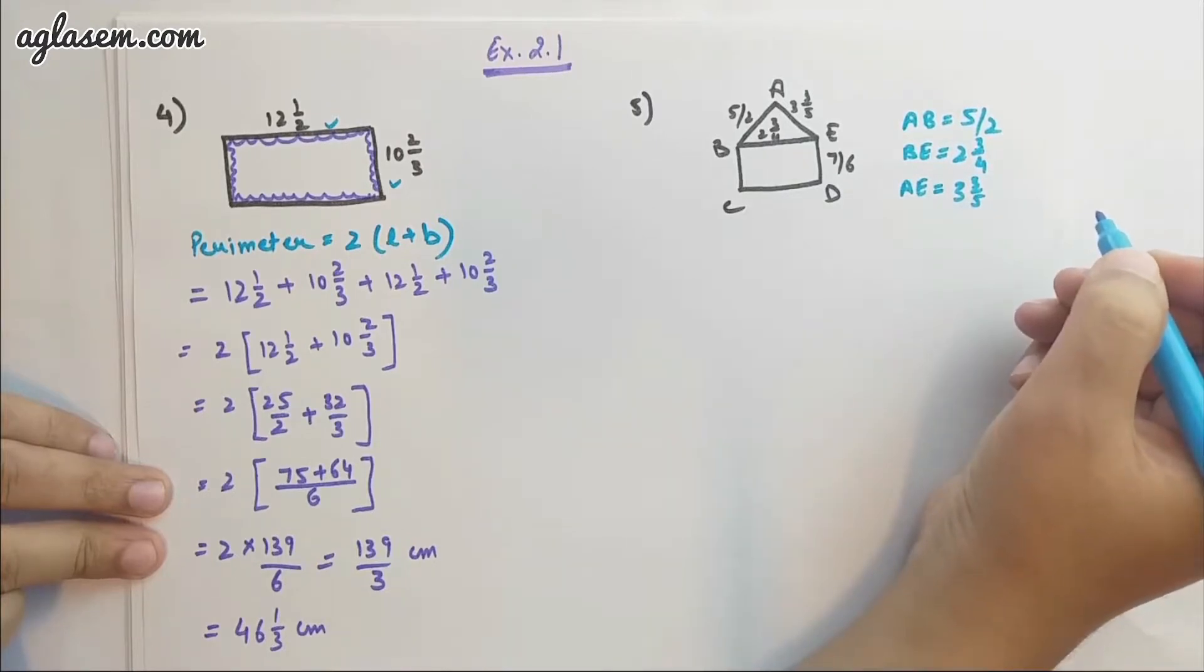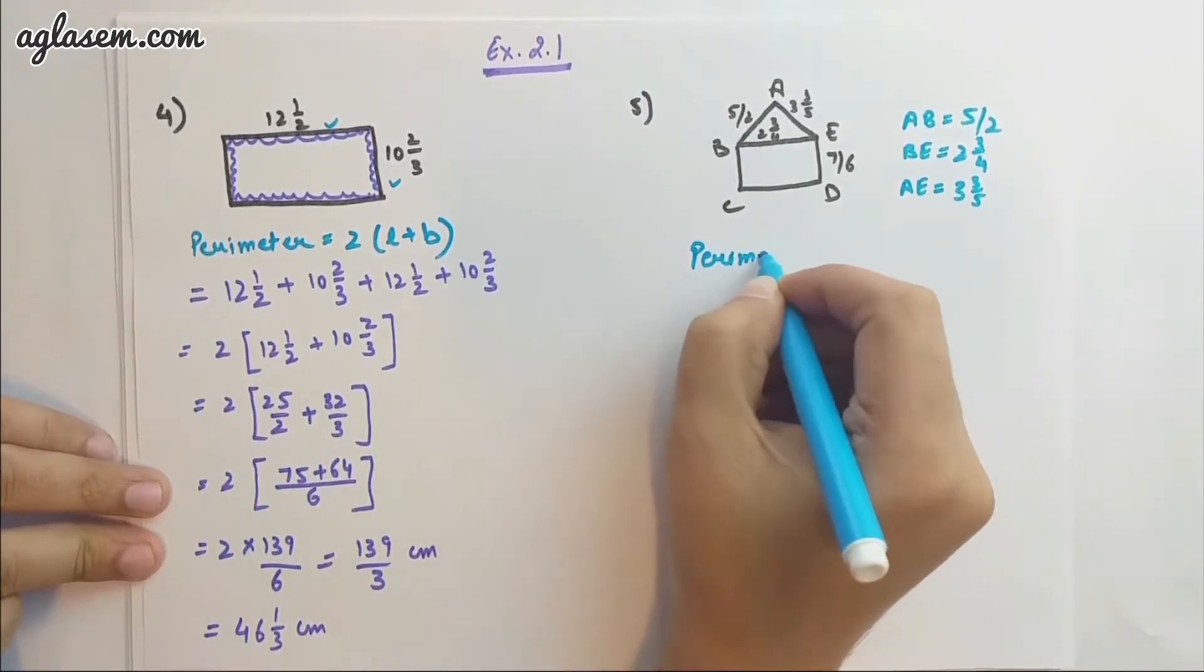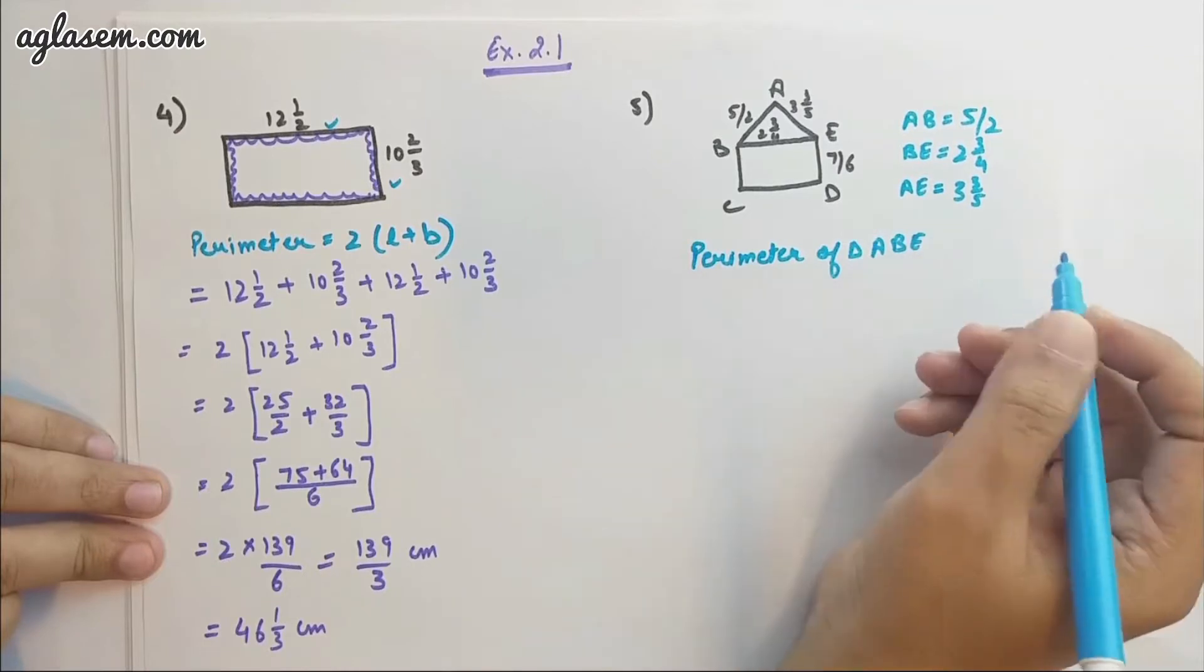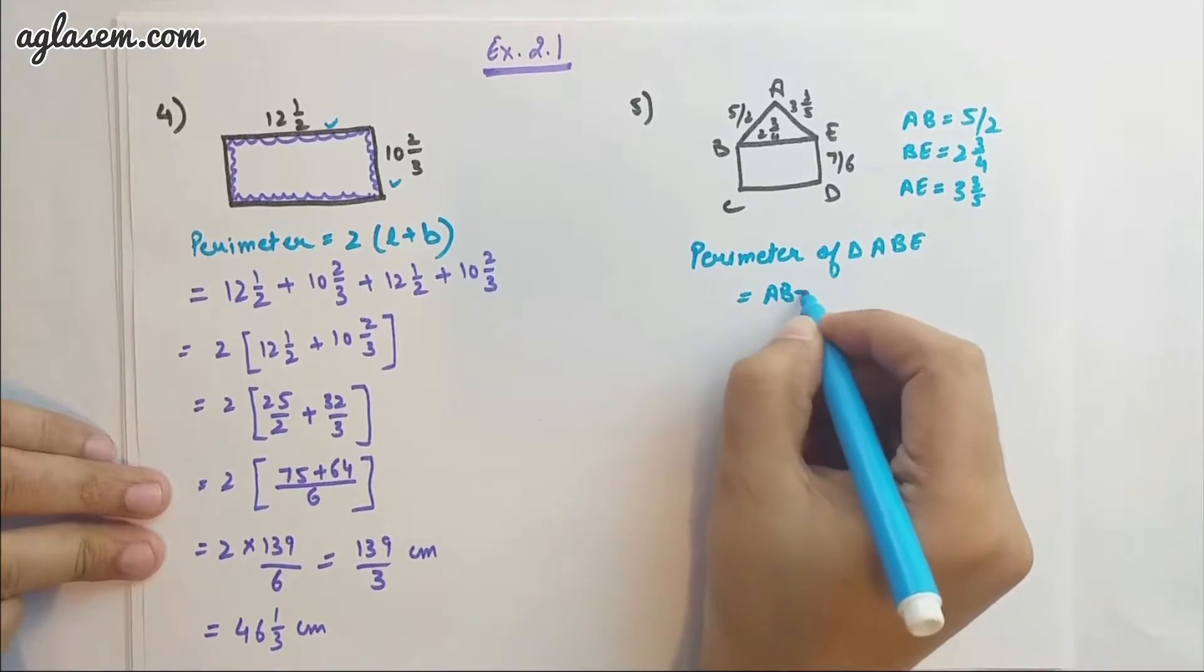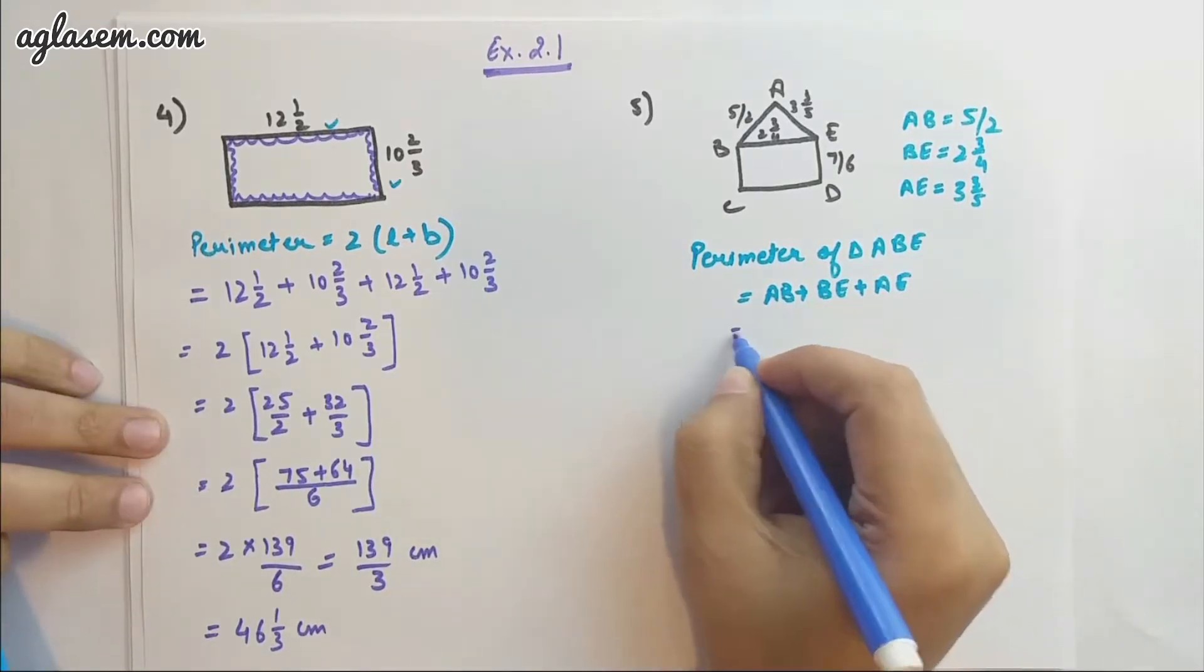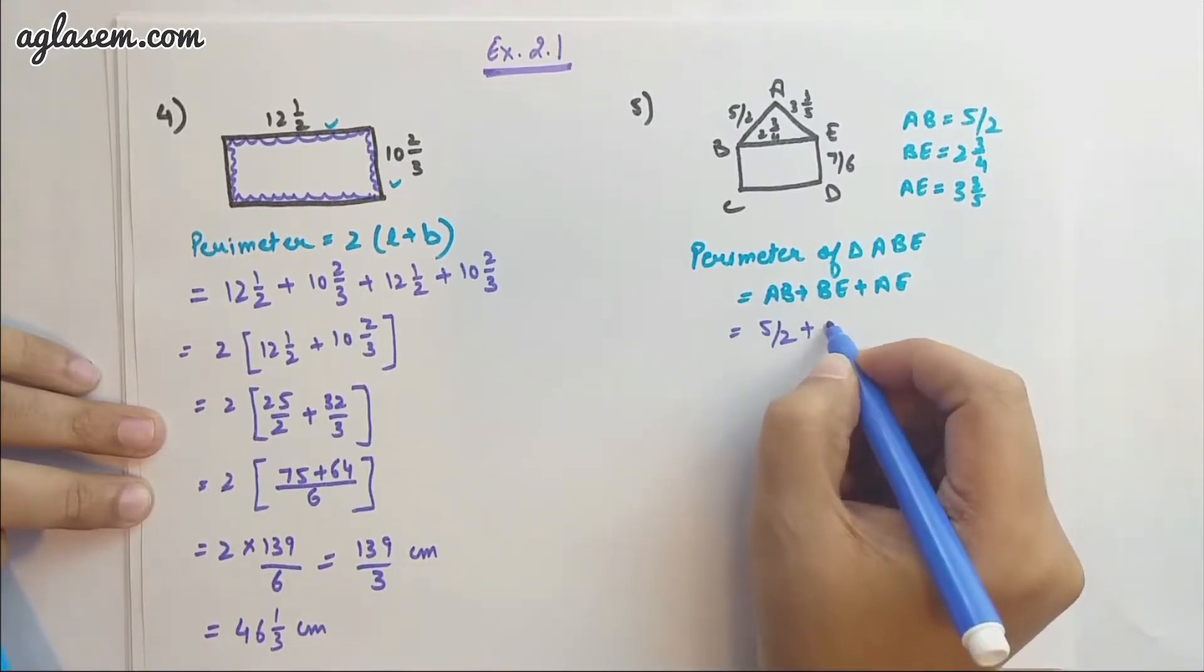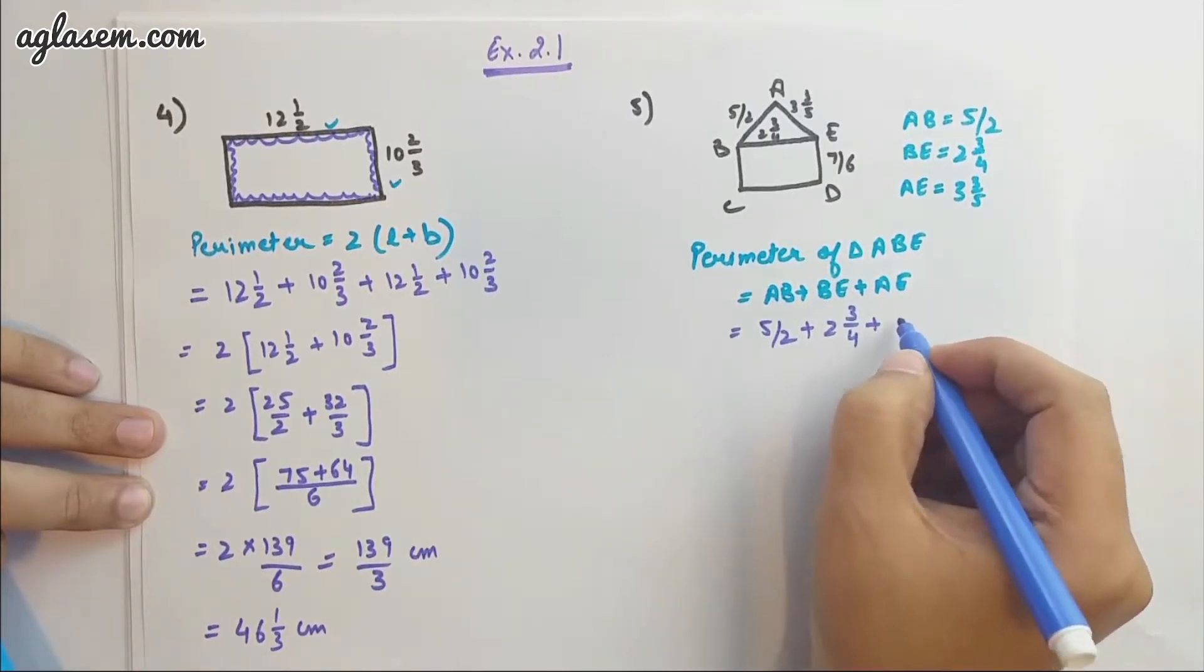Now if we have to find perimeter of triangle ABE, it is simply addition of the 3 sides. That is AB + BE + AE. The 3 sides are 5/2 + 2 3/4 + 3 3/5.